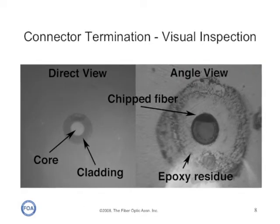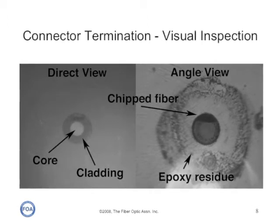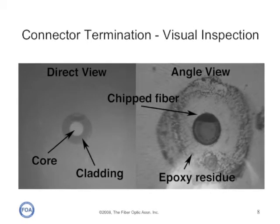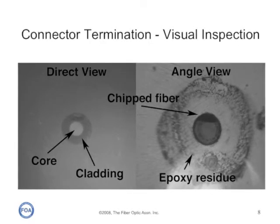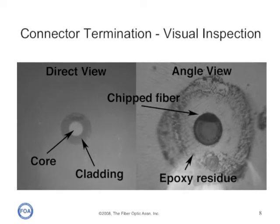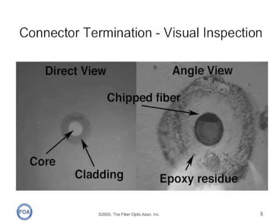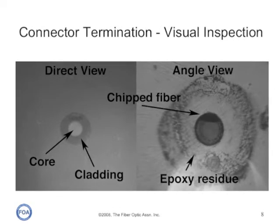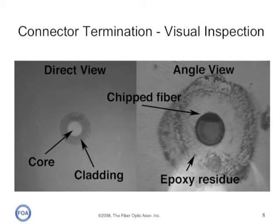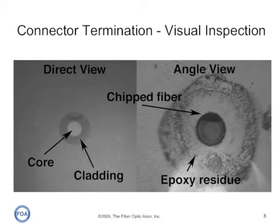Here are two views of the end of the same connector ferrule. The direct view with core illumination allows us to see if there are any defects near the core, and to determine if the fiber is well aligned in the ferrule. But when we look at it with an angle view — either illuminating from the side or looking at the connector at an angle — we can see that this particular fiber has been chipped during the termination process and has epoxy residue on it.